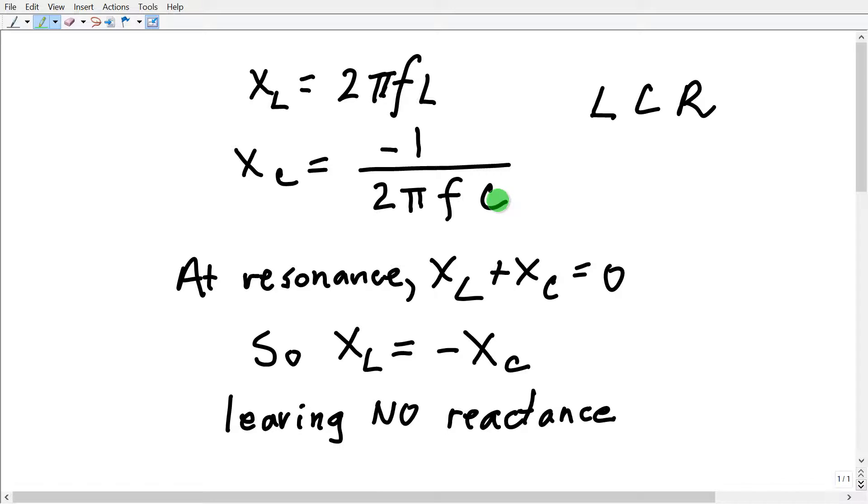We can always convert the units that were given into hertz, henrys, and farads before we go to work on the equation. At resonance, the inductive reactance and the capacitive reactance exactly cancel each other out. And if there is any resistance in the circuit, that remains, but the inductance and the reactance cancel out.